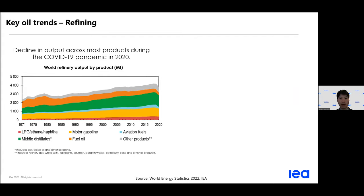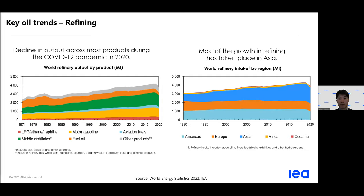Key oil trends on refining. This graph shows the output across most products from 1971 to 2020, where we were highly impacted by the COVID crisis. It is clearly observed in this graph that in 2020, all refinery output declined. In terms of the growth of refinery output, it's mostly in Asia that is producing these oil refinery products, and again, in 2020, we observed a really sharp decline due to the COVID crisis.